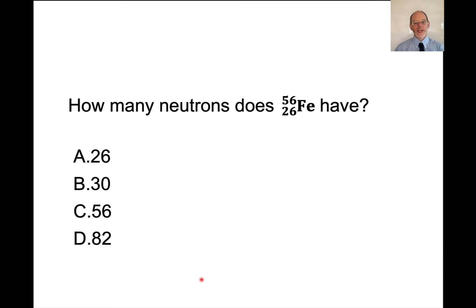So first of all, let's do a little review here. How many neutrons does iron-56 have? And the answer is 30. Remember, this number in the upper left is the sum of protons and neutrons. 26 is the atomic number, the number of protons. So if we subtract these two, we get 30, and 30 must be the number of neutrons.